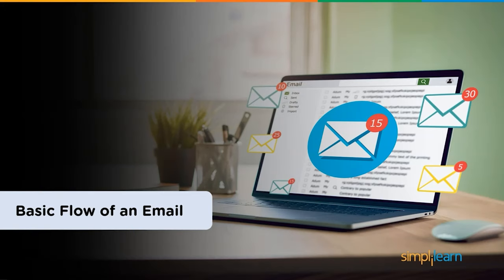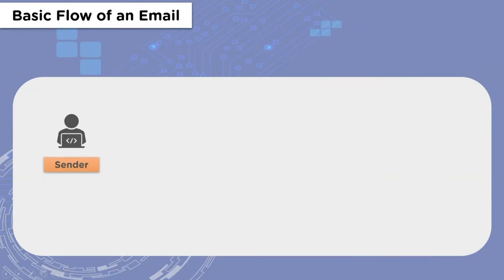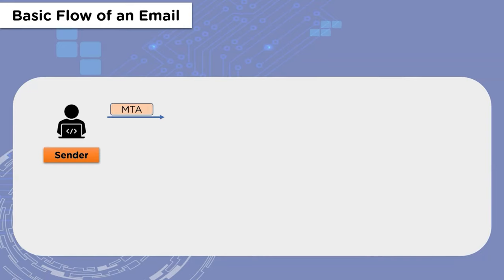Now that we have an idea of what an email is, let's look at the different servers and online channels that an email goes through. The sender writes a message using an email client such as Apple Mail or Gmail, and sends it through what is known as an MTA — Mail Transfer Agent. This step is done by maintaining different types of SMTP protocols.